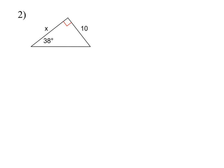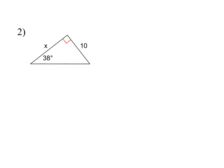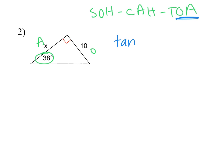This is example two. Notice I'm labeling according to the angle again. The hypotenuse is my unknown side. Looking at my three ratios — SOH-CAH-TOA — I've got opposite as my known side (10) and adjacent as my unknown (x), so I should use TOA. The trig equation is: tangent of 38° = opposite over adjacent = 10/x.